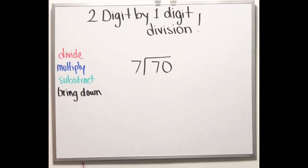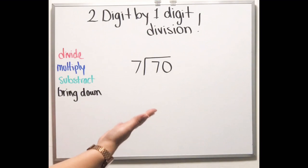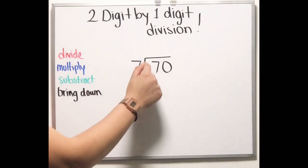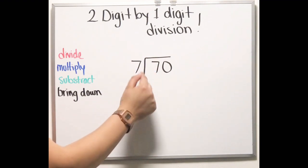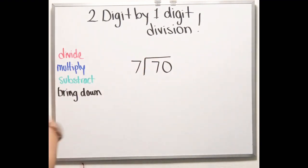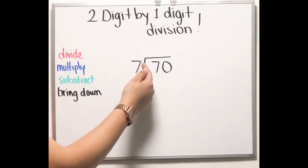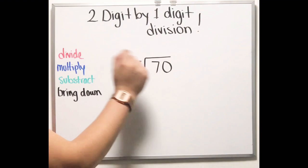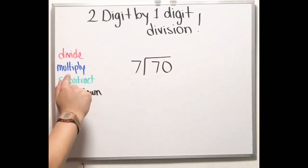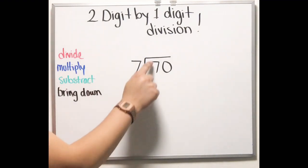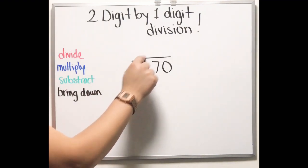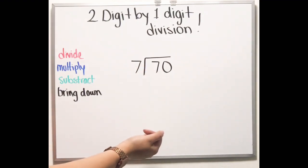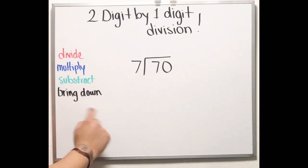Here I have several steps you have to follow in order to solve a division. The first step is to divide. The second step is to multiply — when you get your number, you check if these two numbers give you that one. The third step is to subtract, and the last one is to bring down.